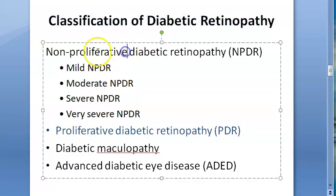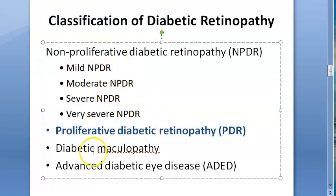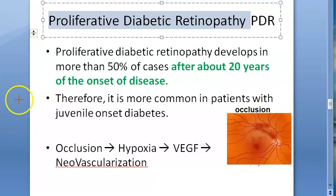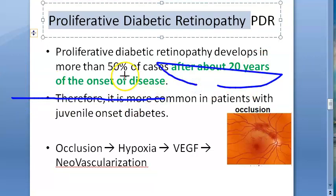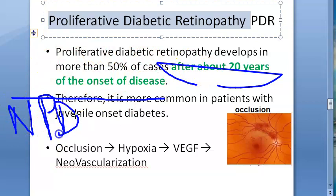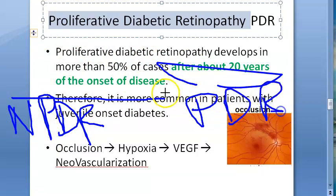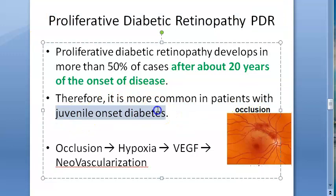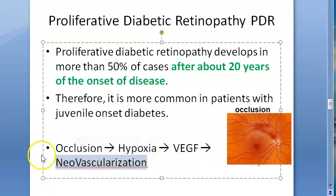In diabetic retinopathy, there are types: non-proliferative diabetic retinopathy (NPDR), proliferative diabetic retinopathy (PDR), diabetic maculopathy, and advanced diabetic eye disease. In PDR, after about 20 years of long-standing diabetes, patients progress from NPDR to PDR. It is more common in patients with juvenile onset diabetes, since they get diabetes earlier and land in PDR at a younger age. The key mechanism is occlusion → ischemia → hypoxia → VEGF → neovascularization.